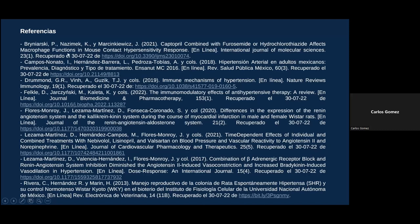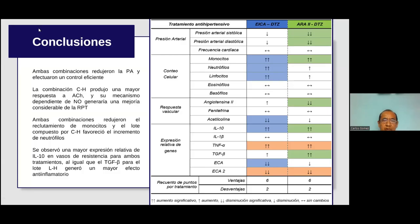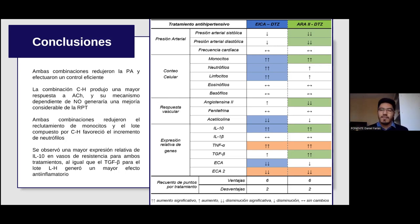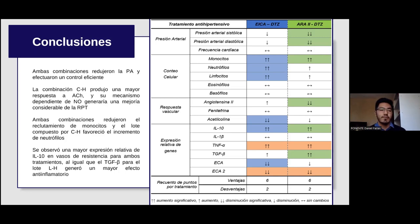Agradecemos a Daniel por esta interesante presentación y pasamos a la serie de preguntas. ¿Por qué el captopril da tos? Eso depende de cada organismo; no es que el captopril dé tos a todos, sino que ciertas personas tienen más susceptibilidad. Hay una diferencia en cuanto al organismo de cada uno que genera la tos. No es un síntoma presente en todos los pacientes, sino más bien una condición común en algunos.